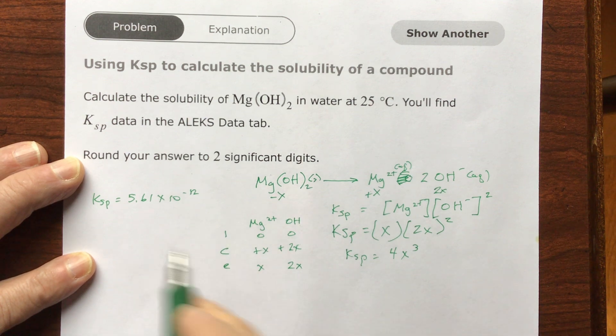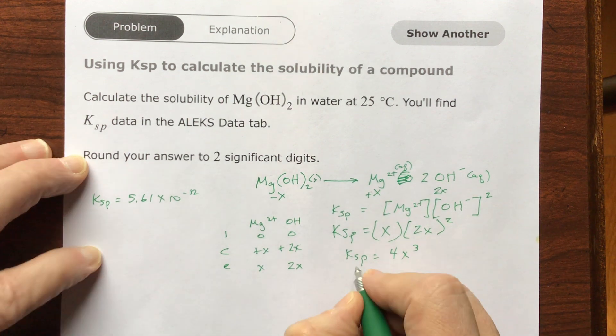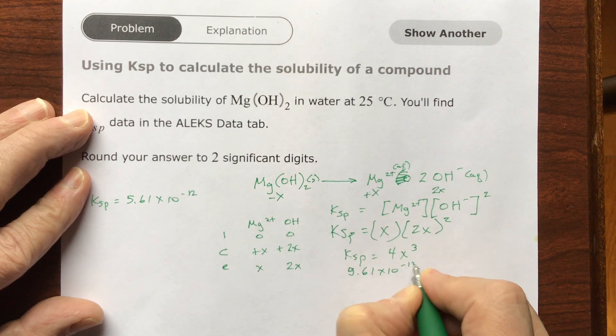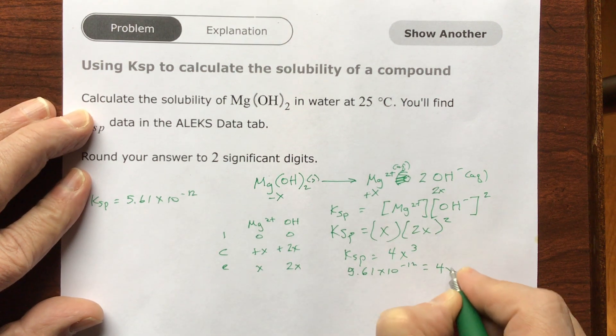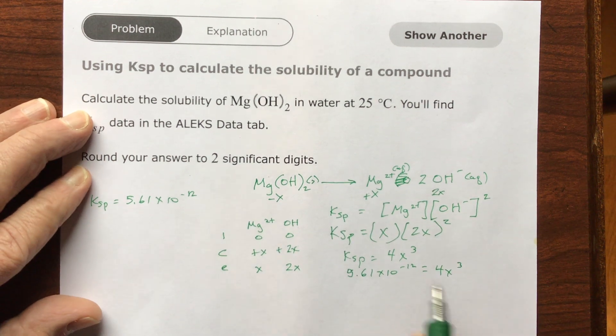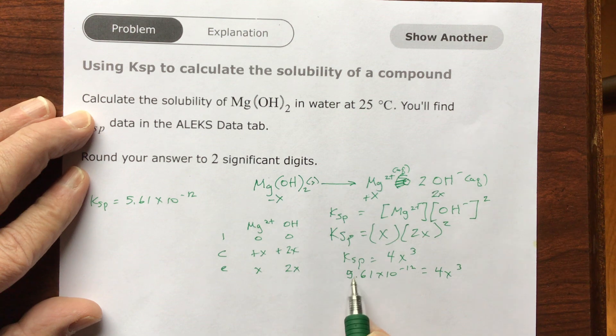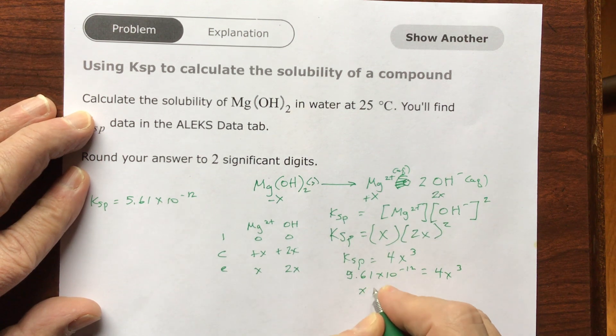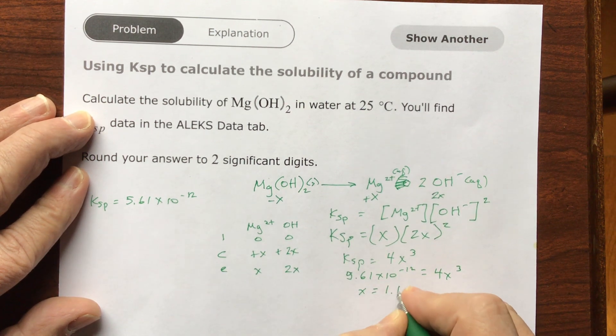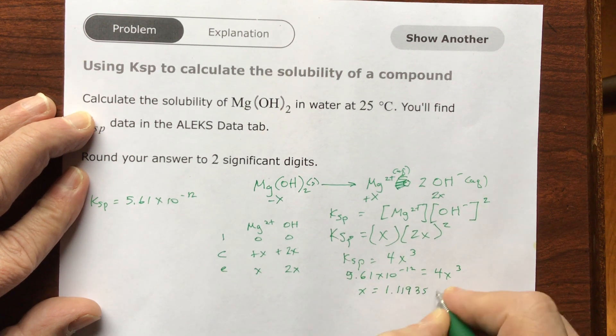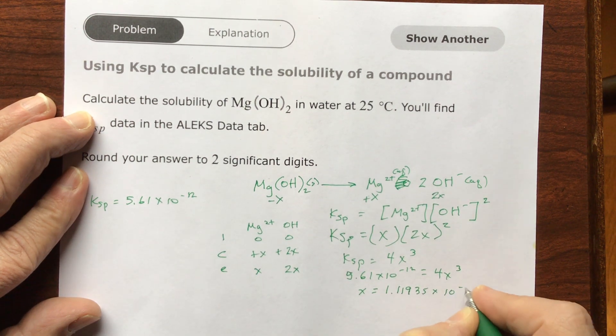And I have Ksp equals 4X to the 3rd power. Now we know this number, so I'm going to write it in. 5.61 times 10 to the minus 12 equals 4X cubed. Divide this by 4, then take the cubed root of this, and I can solve for X. X equals 1.11935 times 10 to the negative 4.